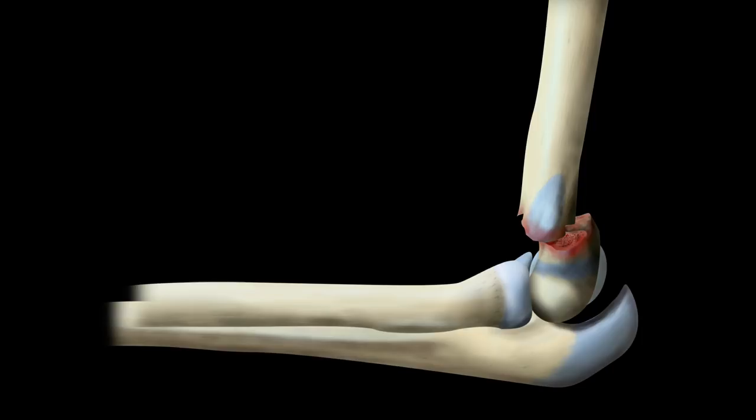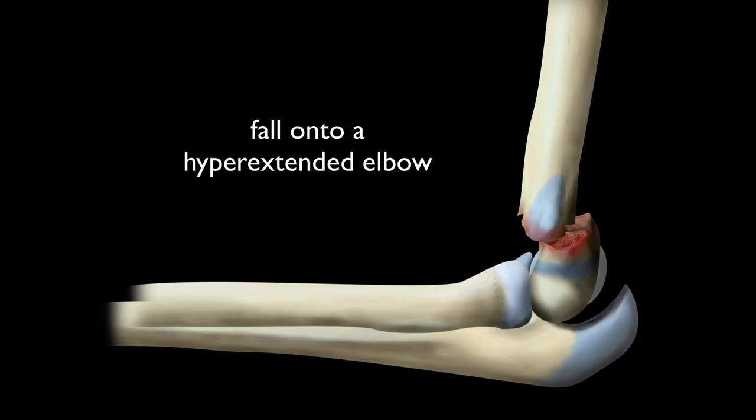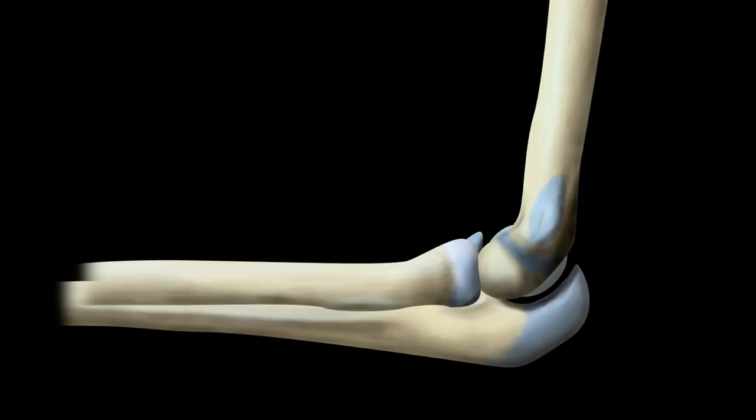Supracondylar fractures are the commonest of the paediatric elbow fractures. They typically occur following a fall onto a hyperextended elbow. As with any fracture, complications include damage to local vessels such as the brachial artery and damage to local nerves such as the ulnar nerve, which can be damaged in severe displacement.